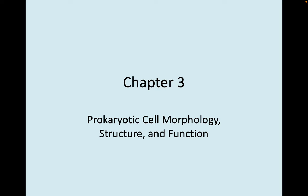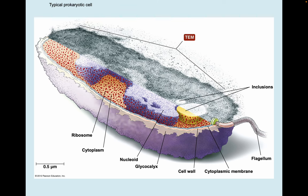Hey guys, today we're going to talk about chapter 3, prokaryotic cell morphology, structure, and function. Here's a typical prokaryotic cell. The right side is what you might see on a transmission electron micrograph of the surface, and the left side is a model or an artist's rendering of what the interior structures of a prokaryotic cell might look like.